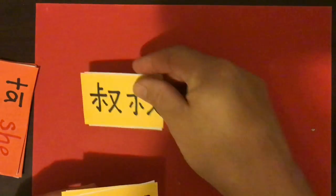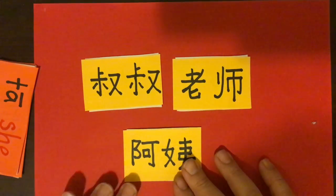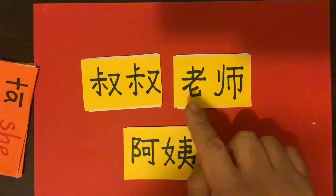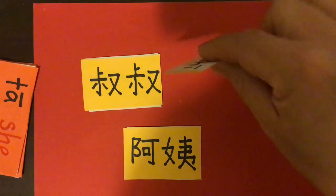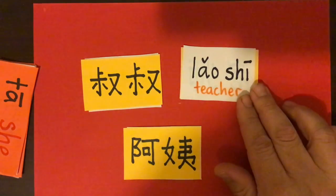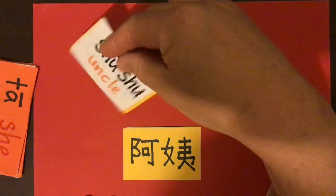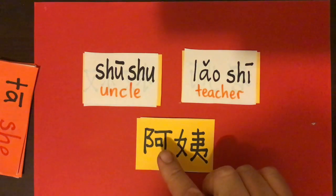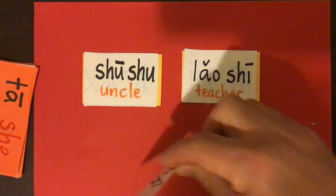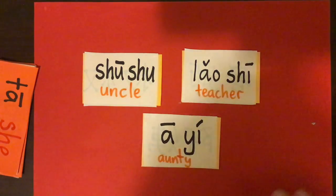We covered these ones last week as well. This one is lǎoshī — that's me, teacher. Lǎoshī. Now we have our word for uncle: shūshu. And we have āyí, which is our word for auntie. Āyí sounds like the English word 'auntie' too, doesn't it?